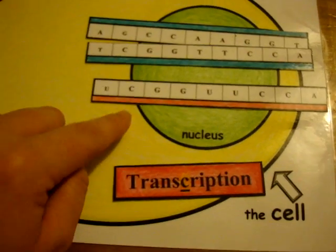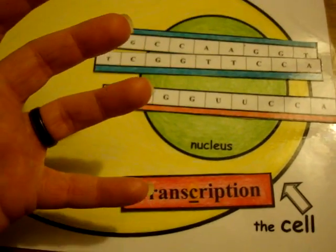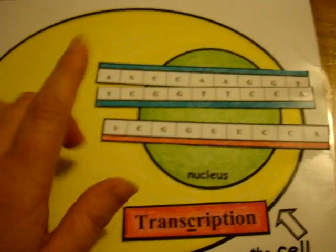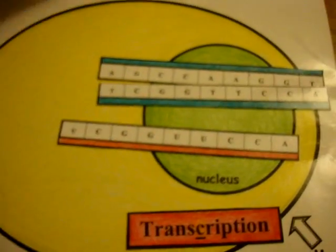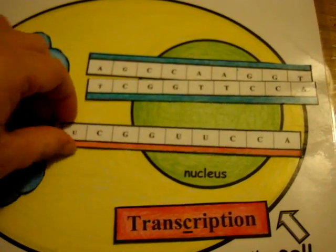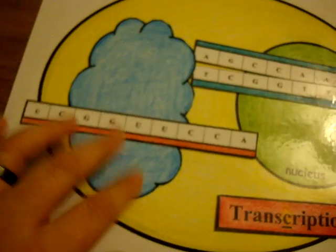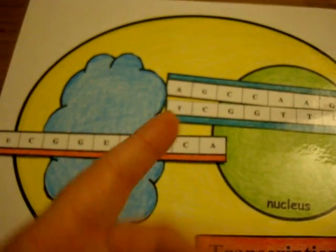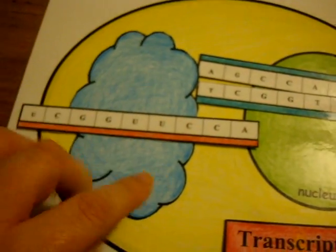Now we have our messenger RNA, and the next process — since there are two processes involved in making proteins — happens outside the nucleus. The messenger RNA is going to leave and hook up with a ribosome. Sometimes, if you recall, they're attached to the rough endoplasmic reticulum, and sometimes they're floating out in the cytoplasm.